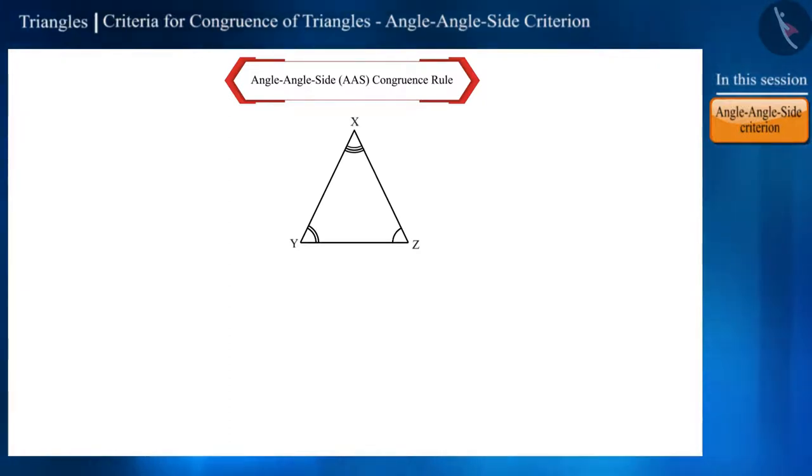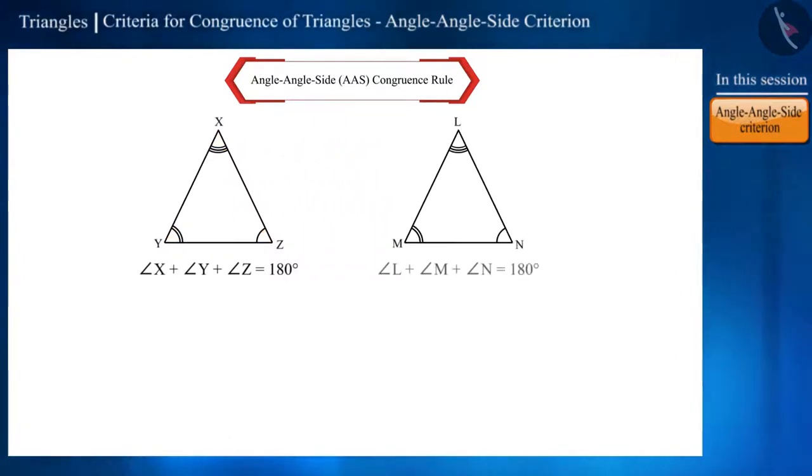Friends, we know that the sum of the three angles of any triangle is 180 degrees. So, if the two angles of any two triangles are equal, then the third angle will also be equal.